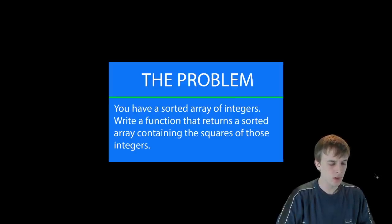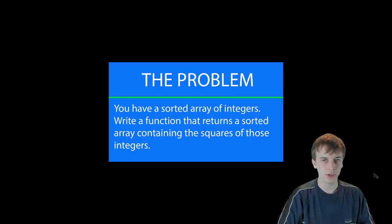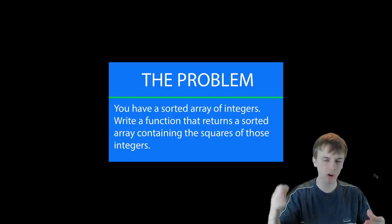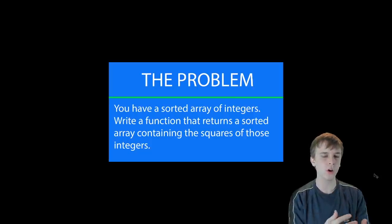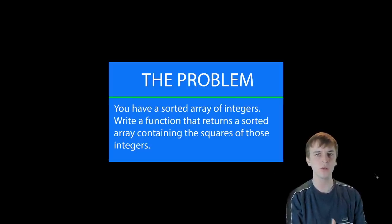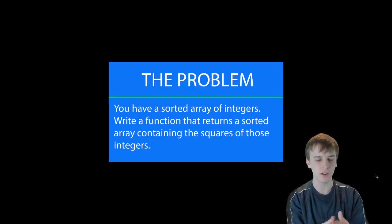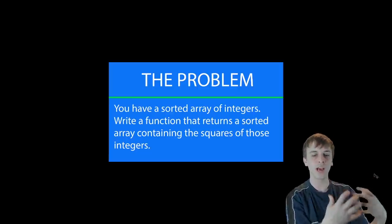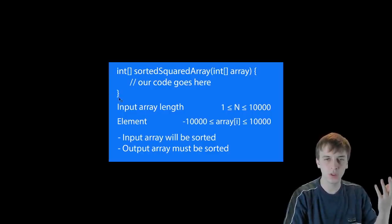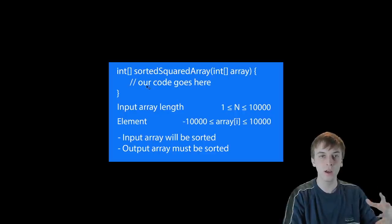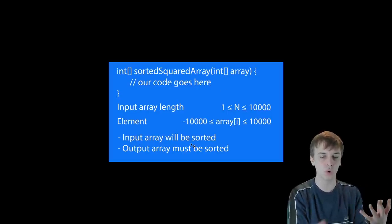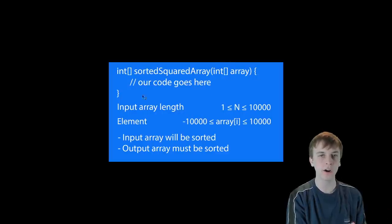First thing we have to do is understand our problem. We're going to be given an array of integers, and we're going to write a function that takes that array of numbers. We have to output an array of numbers that is also sorted. The only thing is that the array we output has to be the squares of all the elements of our input array. So we take our input array, we square every number in it — like two squared would be four — and we output that. The input array is sorted and our output array must also be sorted.